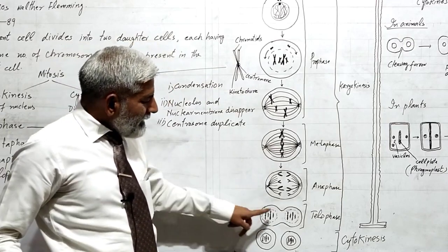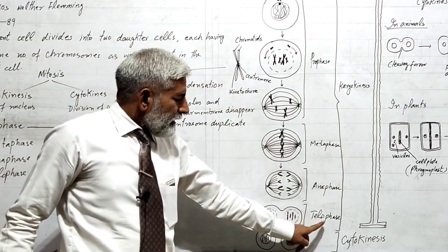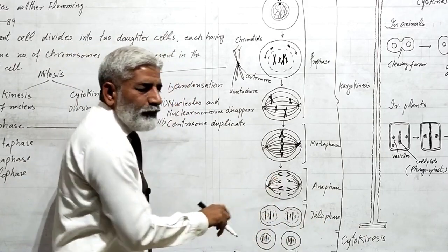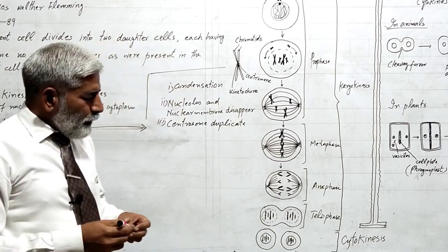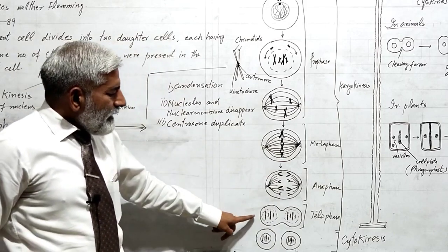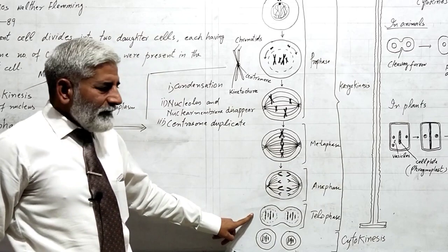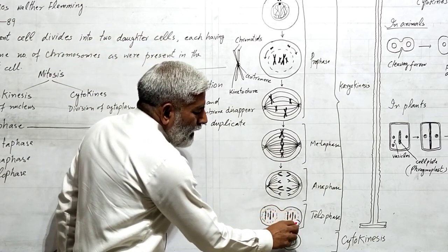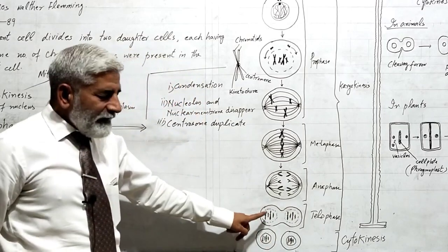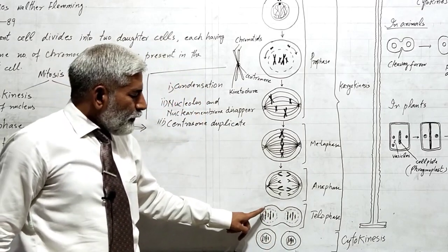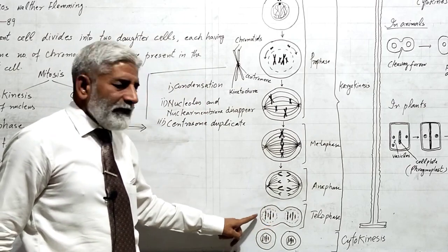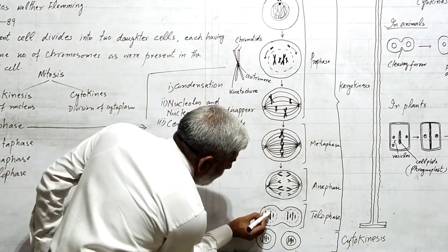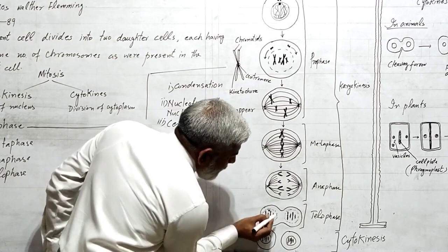Next is telophase. In telophase, these chromosomes reach their poles. And when they reach their poles, the nuclear membrane is formed around each set of chromosomes. And the nucleolus is also formed.